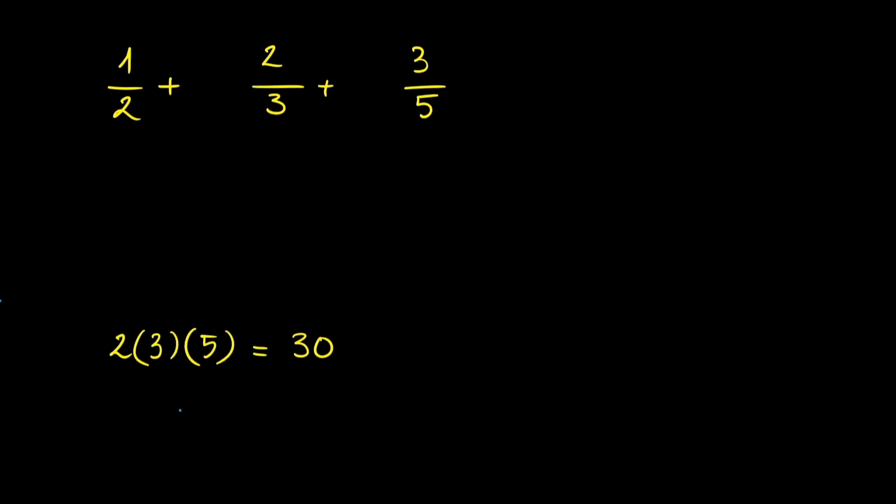3 times 5 is 15, so I'm going to multiply this fraction by 15 over 15. For the second fraction I'm going to use the denominators of the other two fractions, 2 times 5 is 10, I'm going to multiply this fraction by 10 over 10.